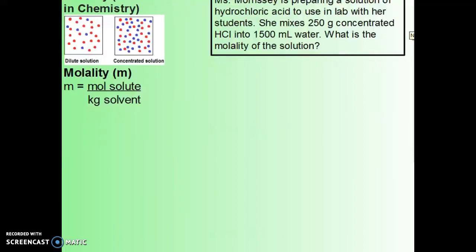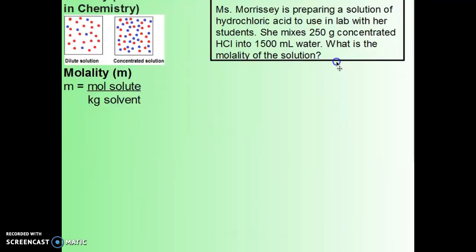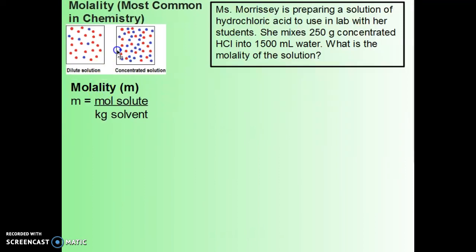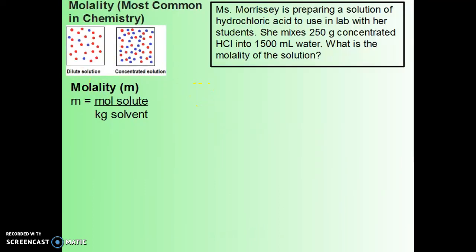The last important unit that we will look at is molality. Molality is talking about the moles of solute in kilograms of solvent. So we're going to need to get our solute in terms of moles and our solvent in terms of kilograms. To go from grams to moles, we have to divide by our molar mass.